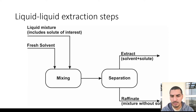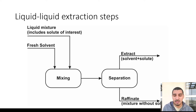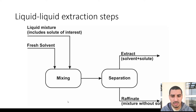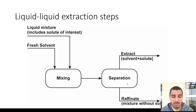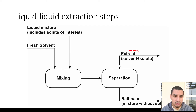The process takes place in two steps: first, mixing the two streams to ensure that mass transfer happens efficiently. Once the mixing and mass transfer are done as well as possible, it's routed to a separation stage where the two streams are left to separate into two liquid phases. One is called the extract, which is the solvent with the solute after it has been pulled out of the liquid mixture.